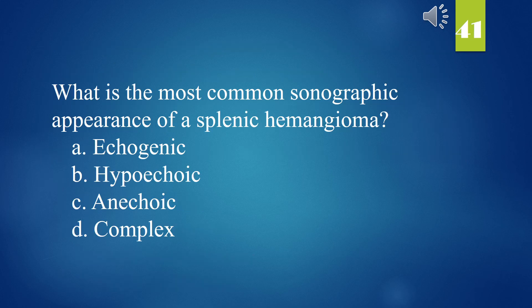What is the most common sonographic appearance of a splenic hemangioma? A. Echogenic. B. Hypoechoic. C. Anechoic. D. Complex. The answer is A. Echogenic.